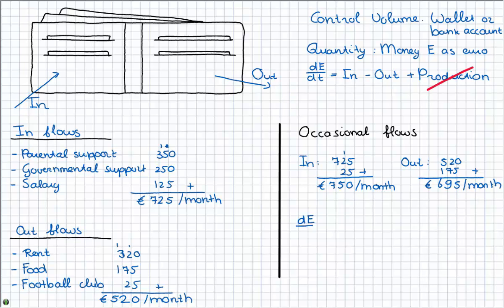Now to solve what we will be left with at the end of this month we will use our balance equation. The de/dt is in minus out. Remember we couldn't have any production inside our wallet.